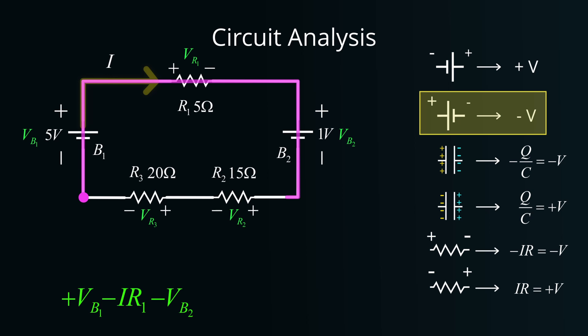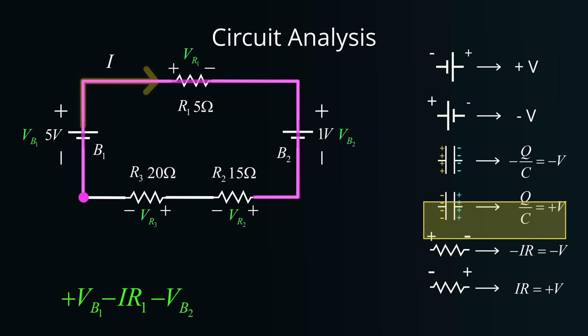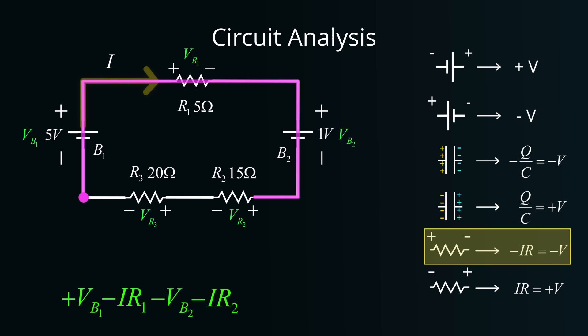Next in line is the resistor R2. Similar to R1, since the direction of current flow aligns with our path of analysis, the voltage drop across R2 will also be negative. Thus, this becomes minus I times R2.